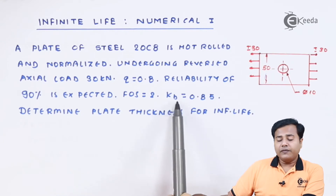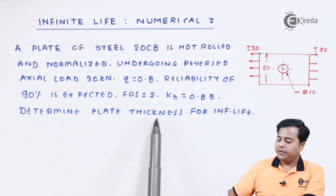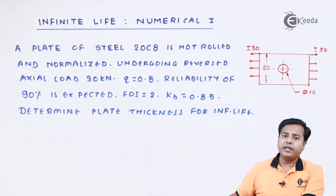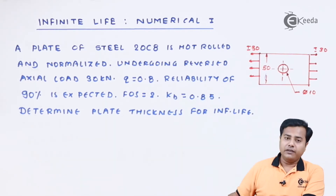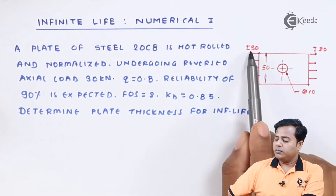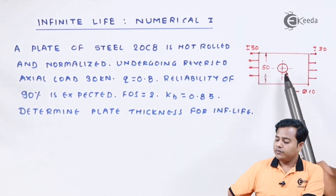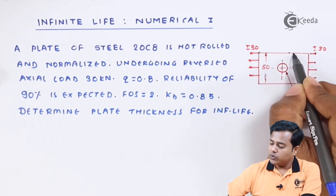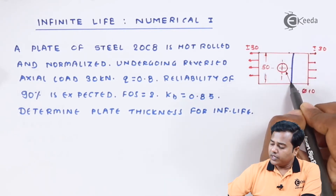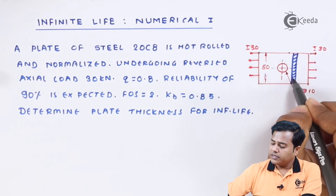The size factor given is 0.85. We need to determine the plate thickness for all these conditions considering infinite life. The key inputs are a plus-minus 30 kN reverse load acting on a plate with a circular hole inside, and we are expected to find out the thickness of this plate.